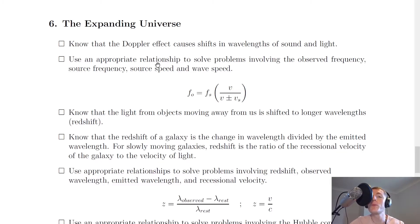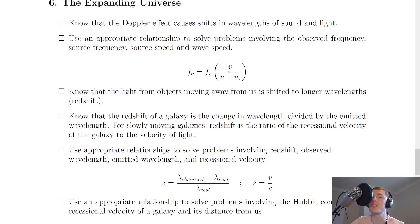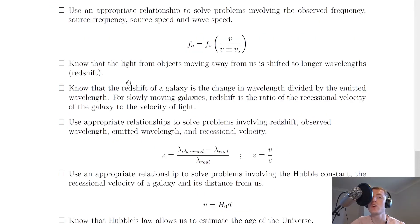You should be able to use the Doppler effect equation to solve problems involving observed frequency, source frequency, source speed, and wave speed. In the equation, f_o is your observed frequency, f_s is your source frequency, v is the wave speed — 340 m/s for sound and 3 × 10⁸ m/s for light — and v_s is your source speed.